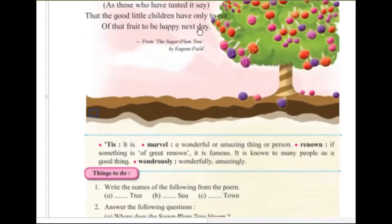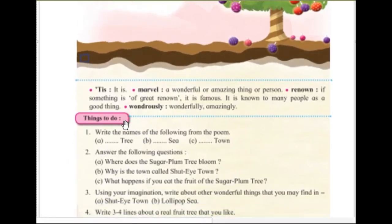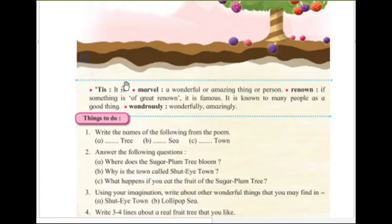Now let us read the meanings. 'It's' — it is. 'Marvel' — a wonderful or amazing thing or person. 'Renown' — if something is of great renown, it means it is famous and known to many people as a good thing. 'Wondrously' — wonderfully, amazingly.